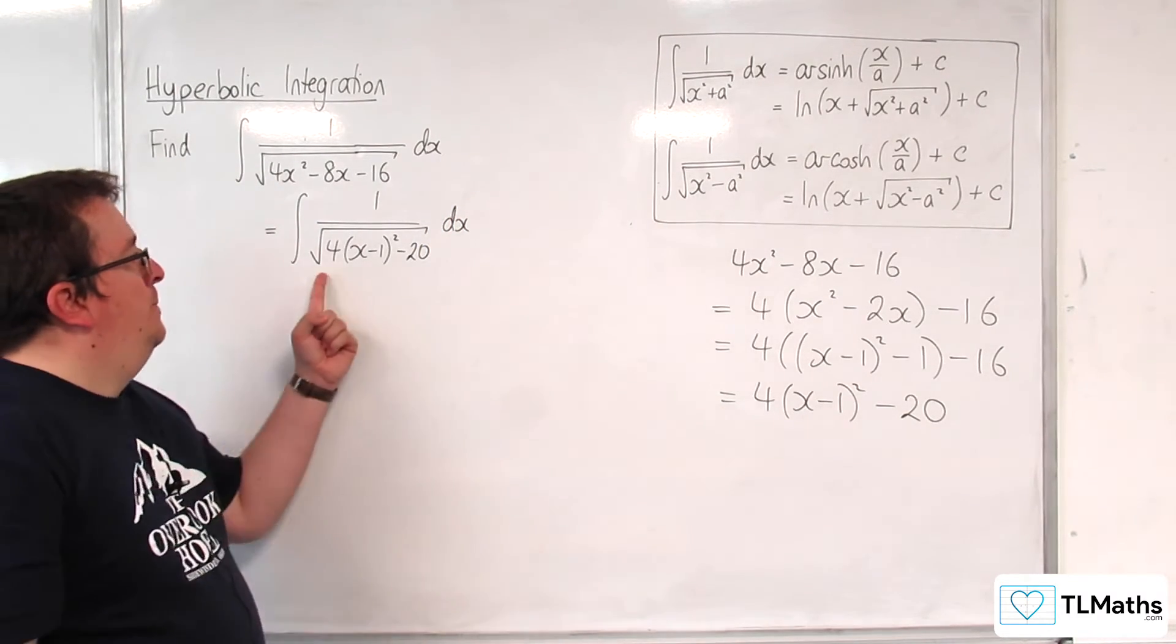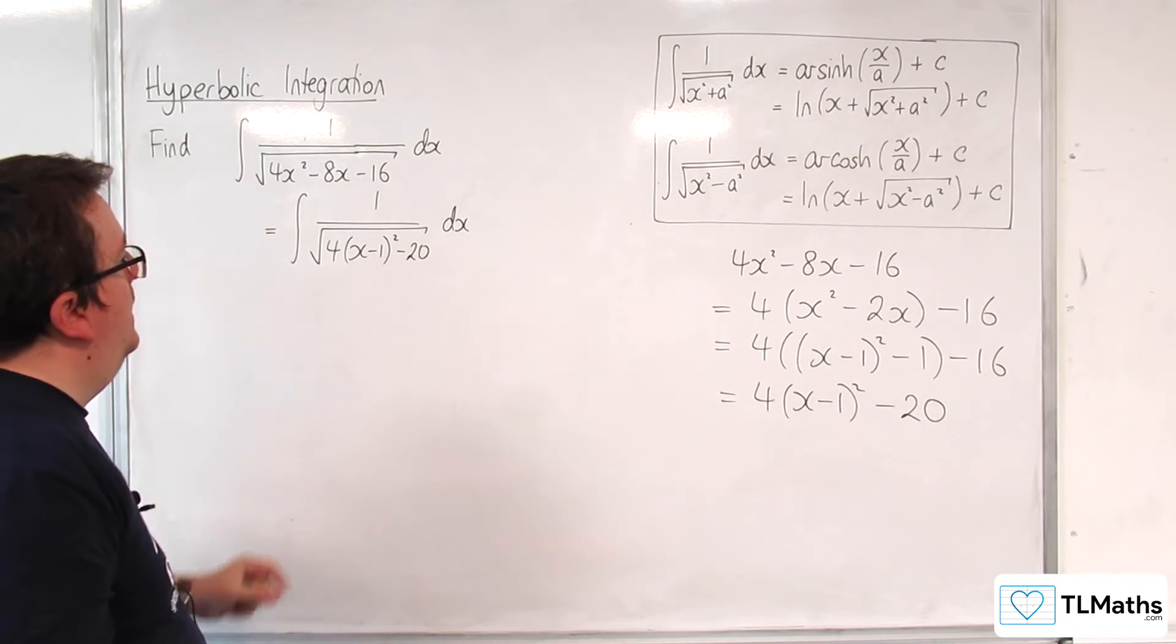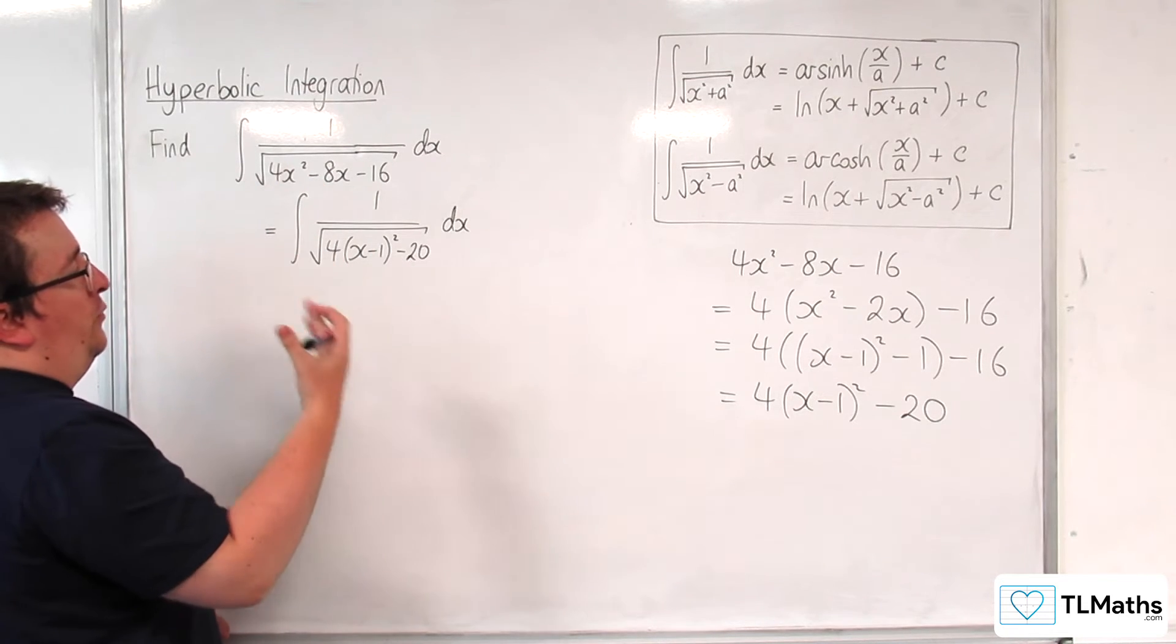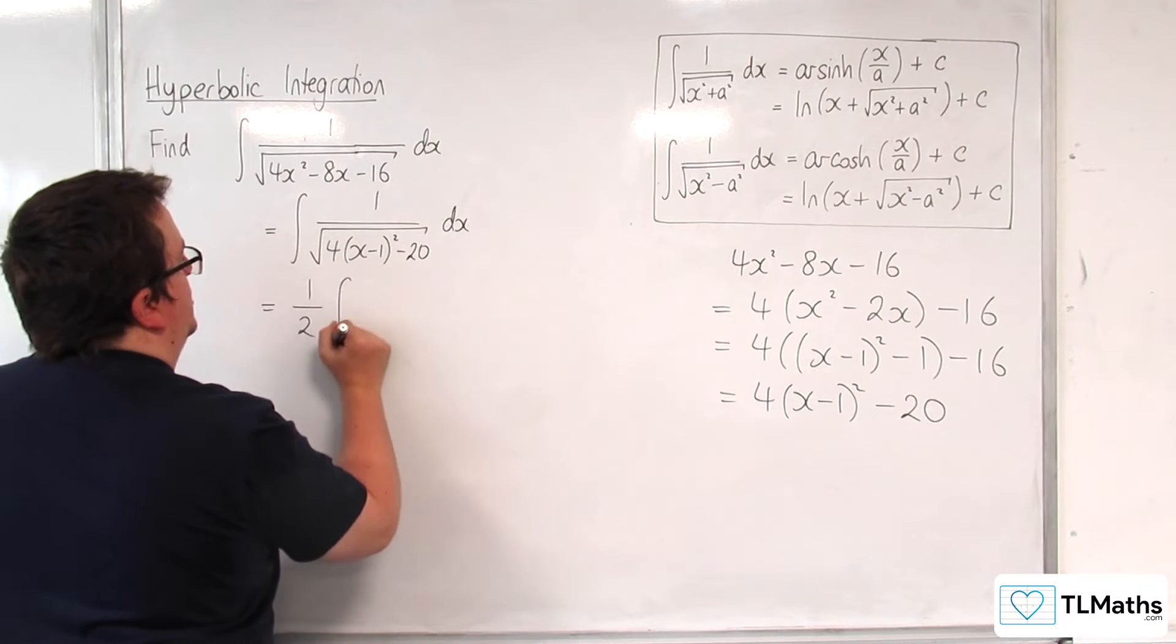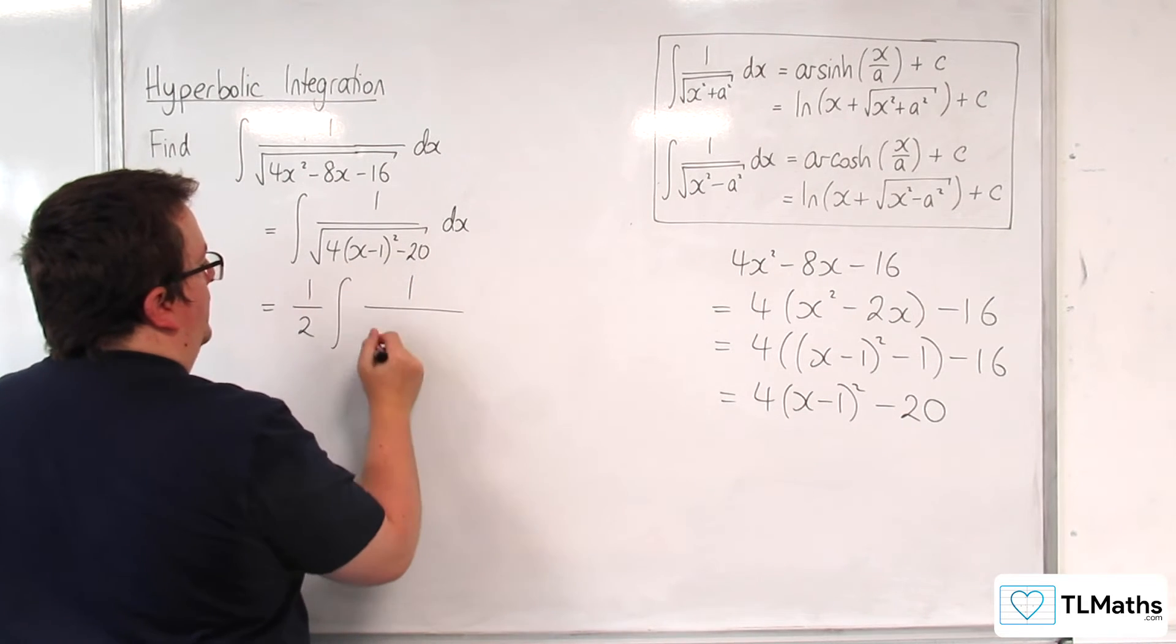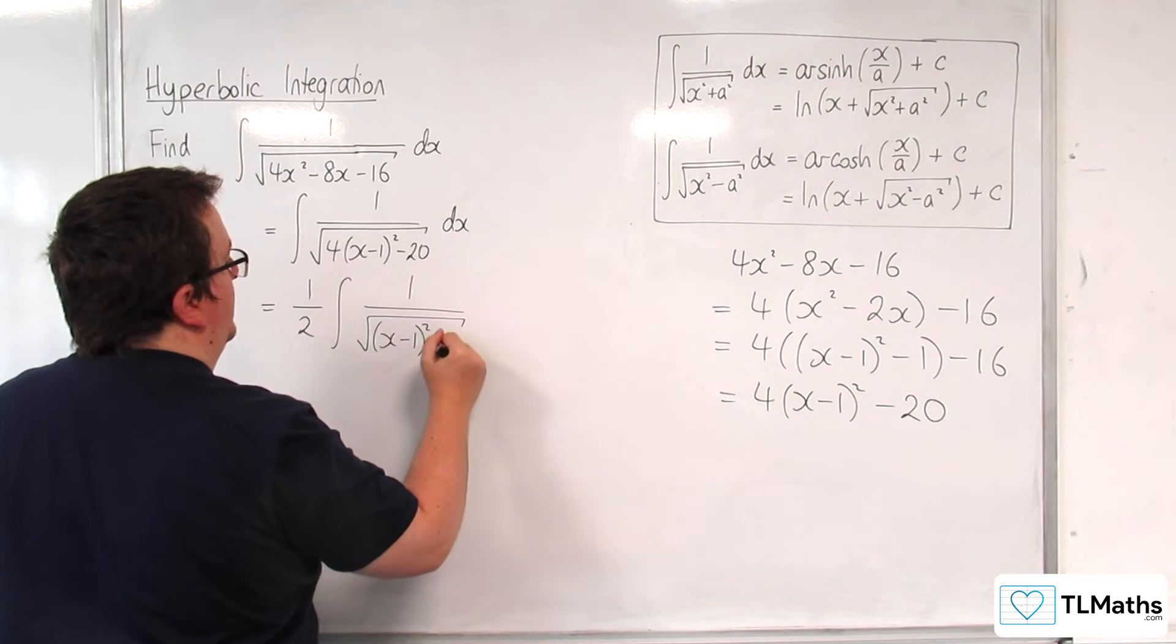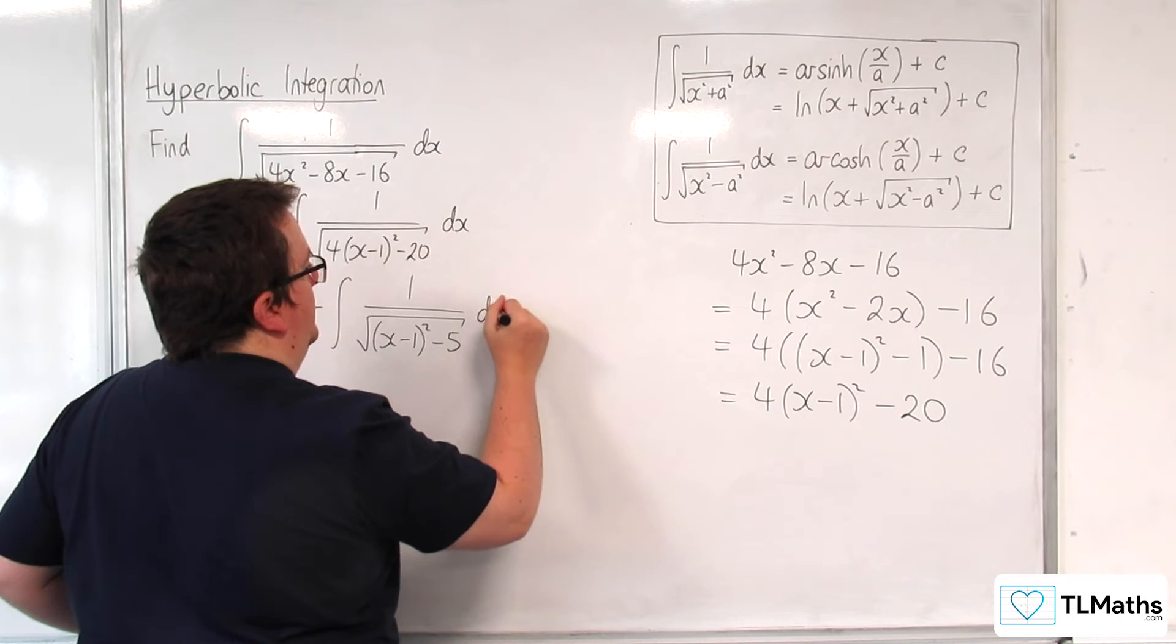Now, what we're going to want to do is factor the 4 out of those two terms and bring it outside the square root. So, we've got 1 over the square root of 4. So, 1 half times by the integral of 1 over the square root of x take away 1 squared. And remember, we factor the 4 out of the 20, so 5 dx.